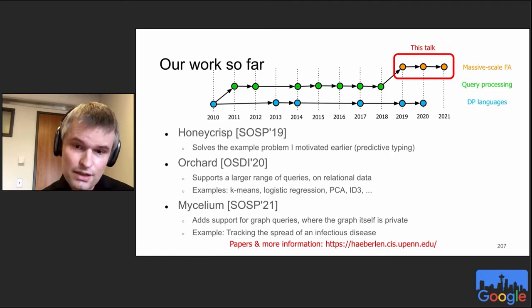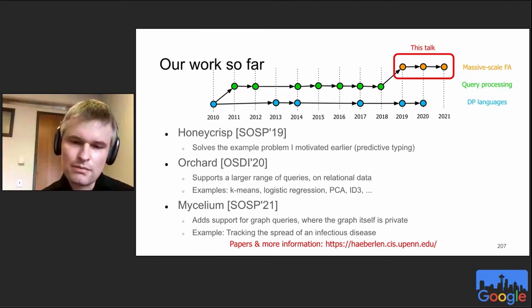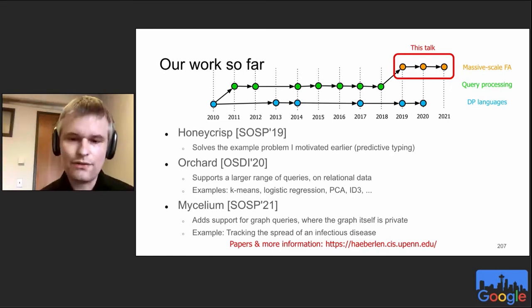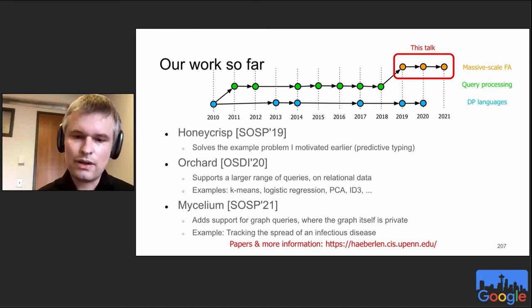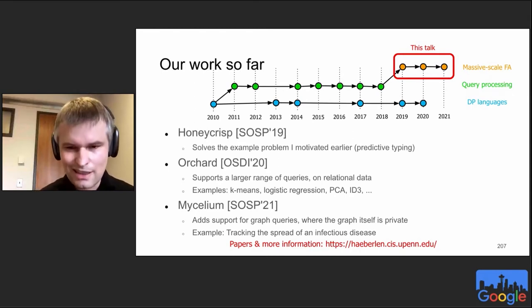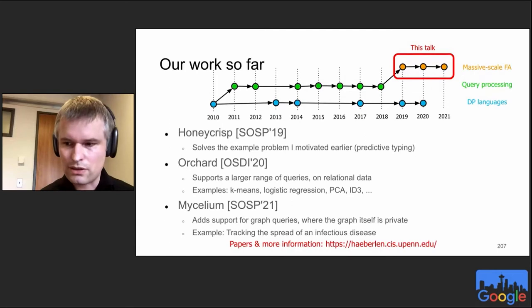This year at SOSP, we have a system called Mycelium. Mycelium generalizes this solution to graphs, where the graph itself can be private — imagine trying to track the spread of infectious disease based on a COVID contact tracing graph.